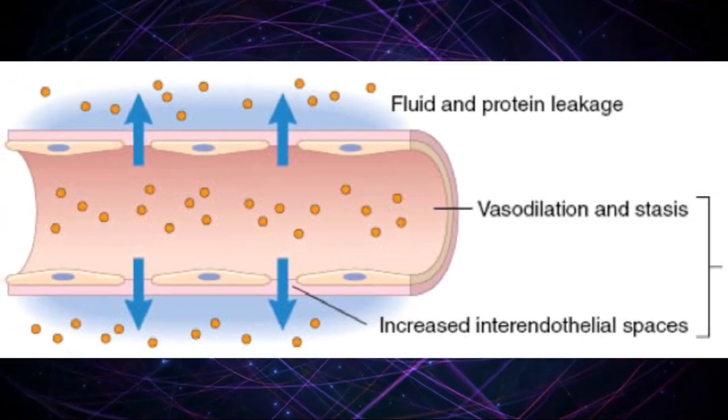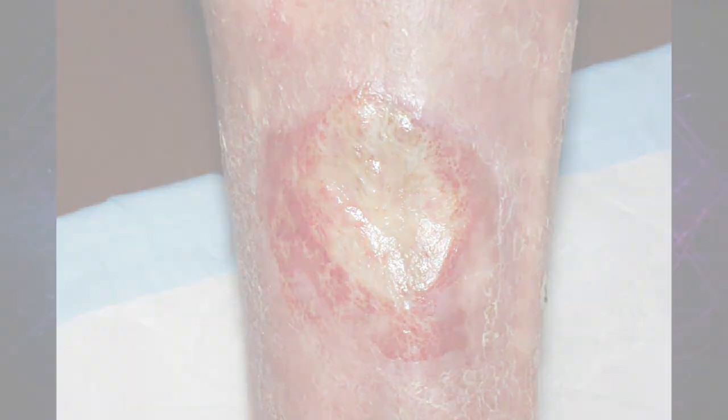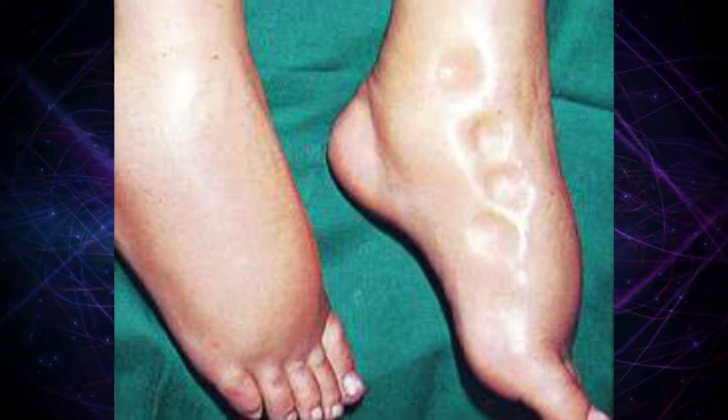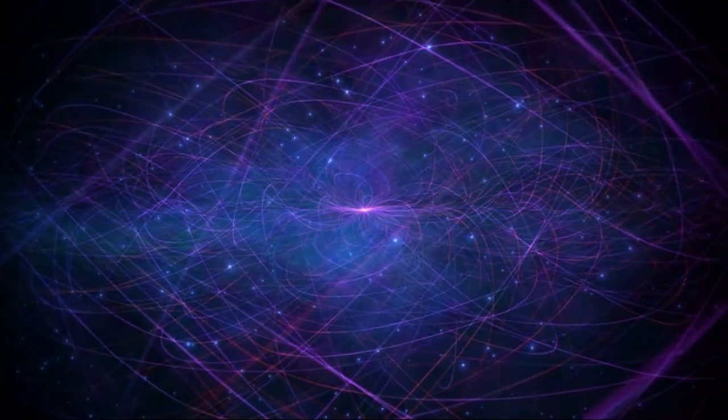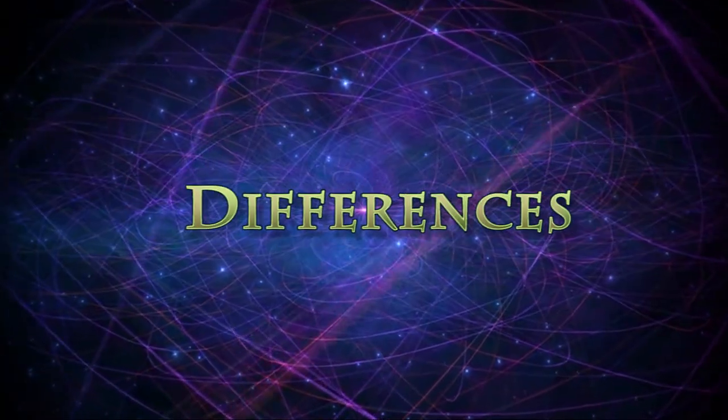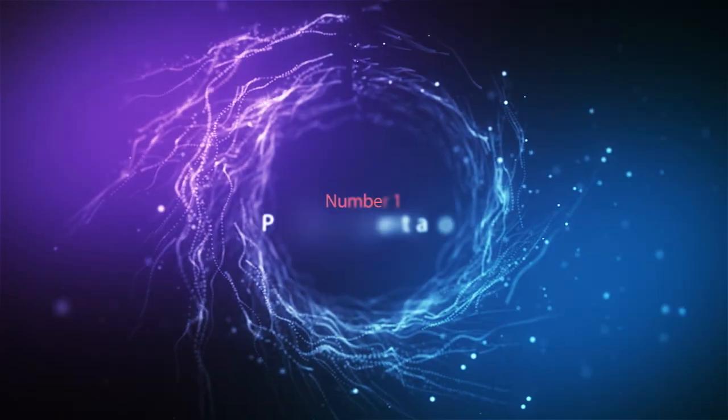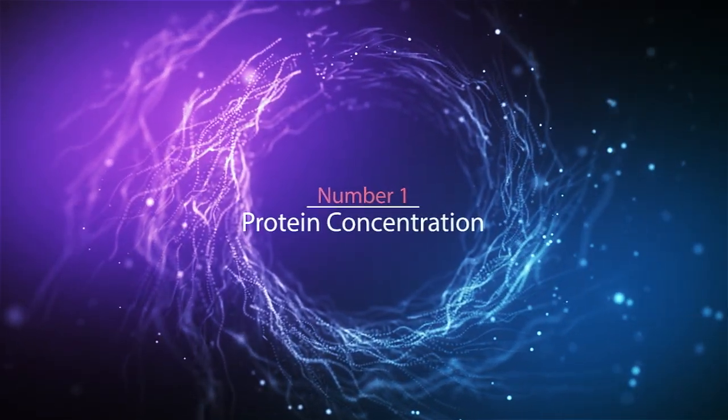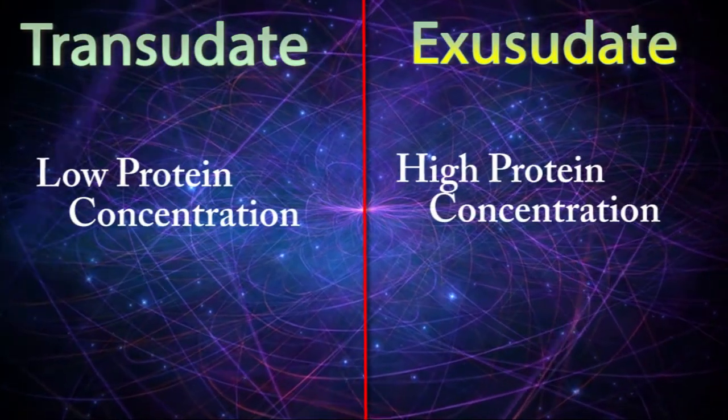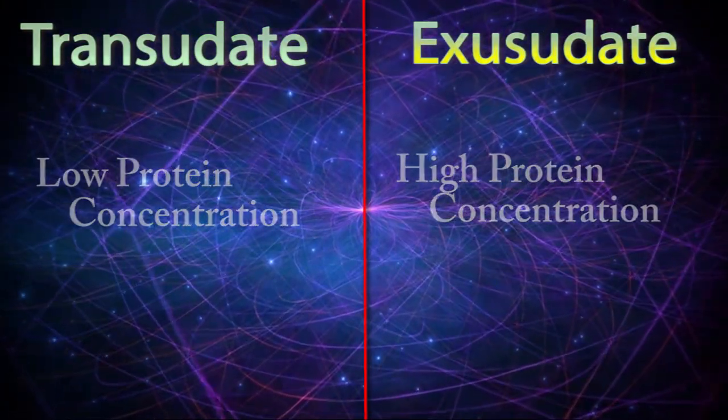Whether from an exudate or a transudate produces tissue edema. Now we are going to see differences between transudate and exudate. Difference number one: protein concentration. Exudate always presents higher protein concentration than transudate.